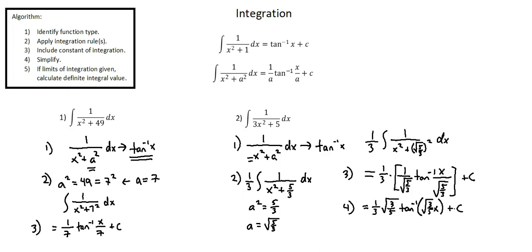Step 5: there are no limits of integration, so we've completed Example 2. The integral of 1 over 3x squared plus 5 with respect to x equals 1 third times root(3/5) times inverse tangent of root(3/5) times x, plus c. We've completed problems 1 and 2. This concludes integration of an integrand whose integral is a function of inverse tangent of x.